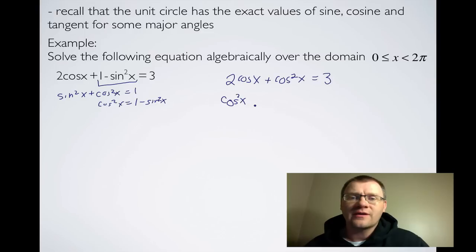Cos²x + 2cosx - 3 = 0. And we factor this thing by finding two numbers that multiply together to give you -3 but add together to give you positive 2. And that would be (cosx + 3)(cosx - 1).